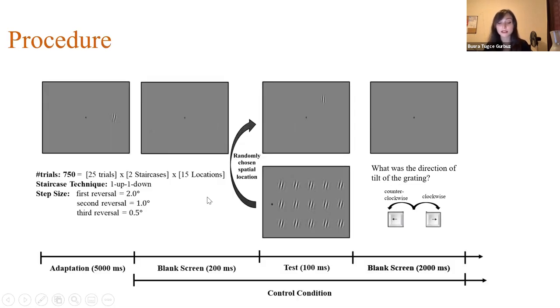Our experimental design was looking like this. First participants are adapted to an adapter grating, which is always tilted to 15 degrees clockwise direction for 5000 milliseconds. And they are presented with a blank screen followed by a presentation of test grating for 100 milliseconds. Test grating was presented at a randomly chosen spatial locations among these 15 test locations. And orientation of the test gratings are determined by one up one down staircase techniques. And then a blank screen presented for 2000 milliseconds where participants need to indicate the perceived tilt of the grating by pressing either right or left arrow key on a keyboard. And the control condition was exactly the same except for adaptation.